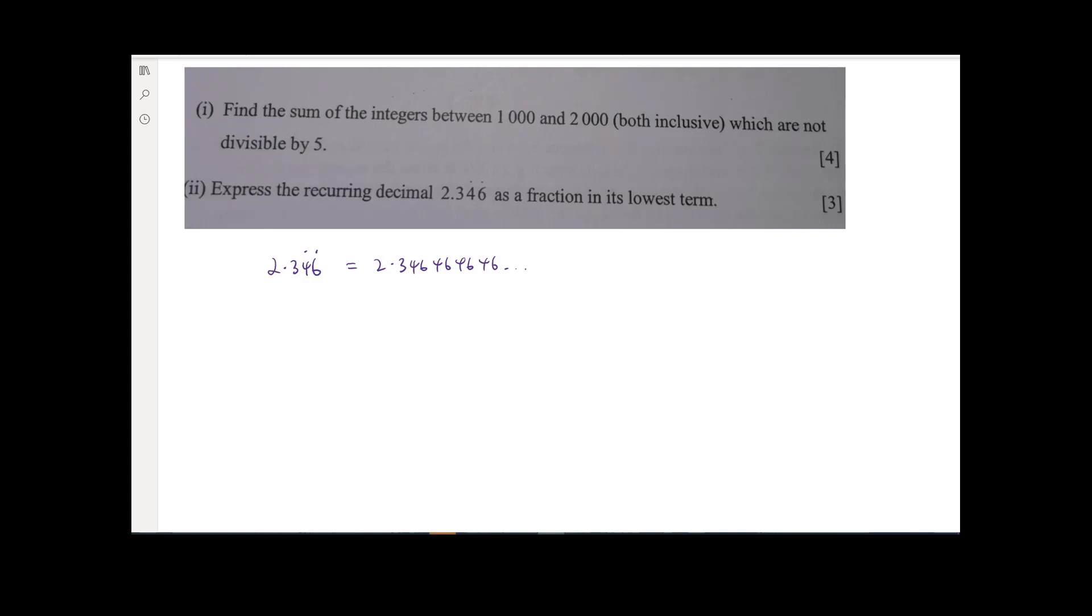Because you just need to identify a pattern. And it's pretty obvious that the pattern is 2.3 plus 0.046 plus 0.00046, right? Plus 0.0000046. Okay, I'm losing count. But you get the idea. Yeah? Because the 4, 6, 4, 6, 4, 6 people are repeating itself, right?